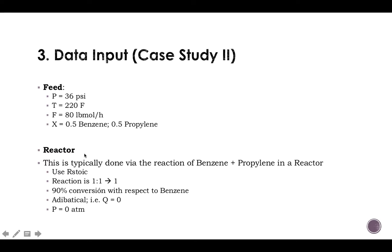Now, let's go for the input data. For the feed, you already know the data. The reactor is an R-Stoic, so you're going to add this reaction. You know that the reaction is one to one, gives you one. So one benzene plus one propylene going to give you one cumene.